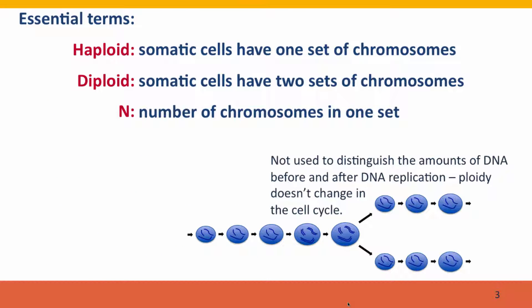First, a review of some essential terms first introduced in module one: the distinction between a haploid organism and a diploid organism. In a haploid organism, the somatic cells — the body cells — have one set of chromosomes. In a diploid organism, such as ourselves, the somatic cells have two sets of chromosomes. All of our somatic cells have a set of chromosomes that we got from mom and a set from dad.